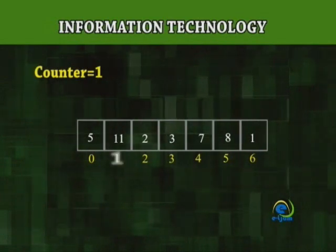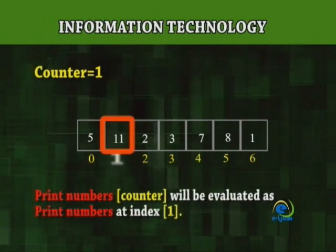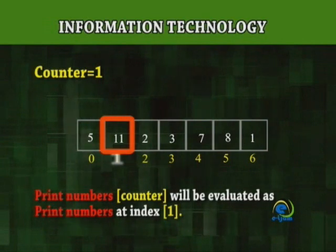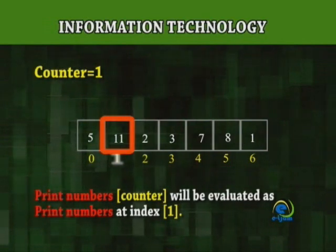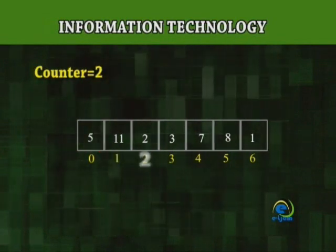The value of counter will then go to 1. At the next iteration of the loop, the print numbers counter will be evaluated as print numbers at index 1. This will continue up to 6 because since the first index is 0, 0 to 6 is 7 numbers.